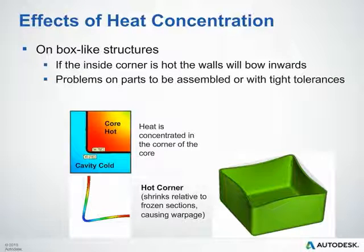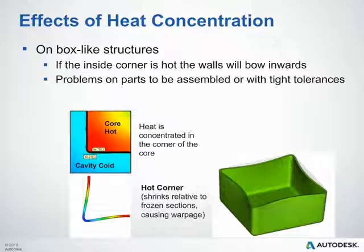Here's a quick example of the effects you can see if there are heat concentrations within your tool. In box-like structures, the inside corner tends to be hot, causing the walls to bow inwards. This creates significant problems on parts that need to be assembled or have tight tolerances — for example, a lid may not match up properly. We need to use the cooling analysis to investigate solutions to remove heat from the inside corners.